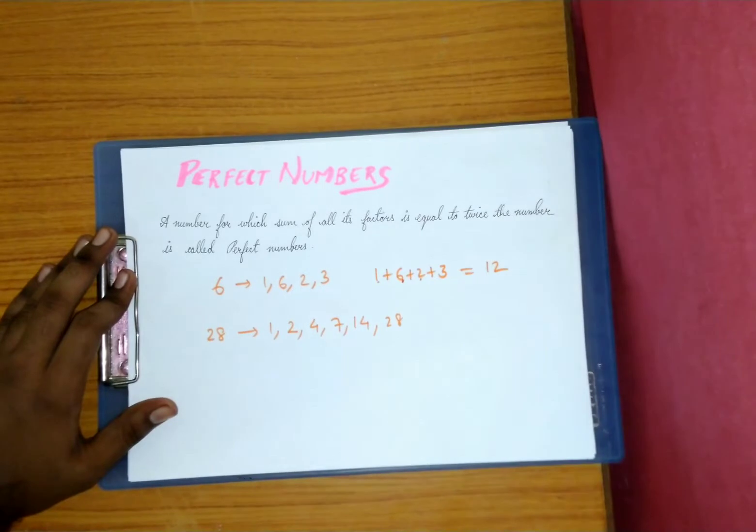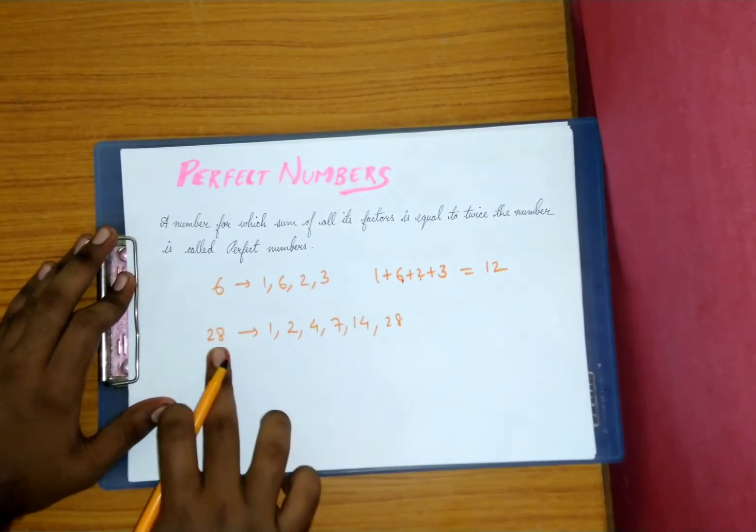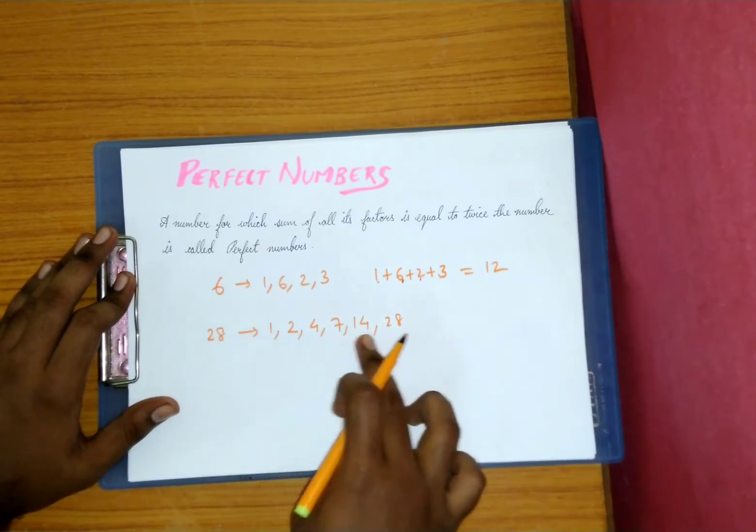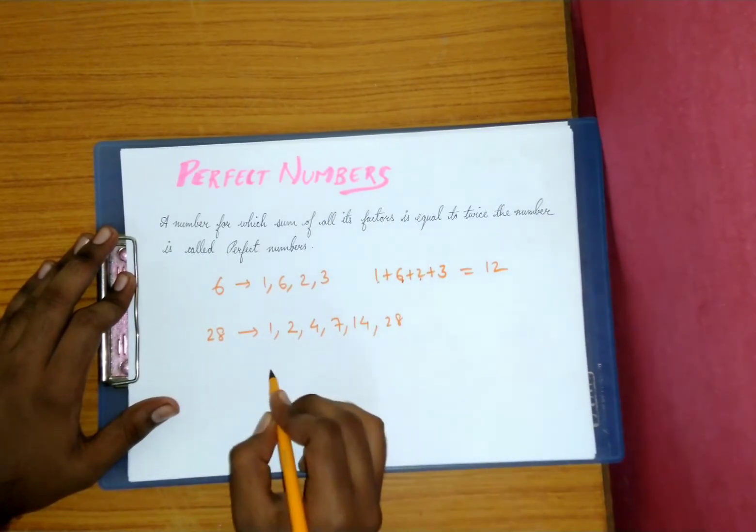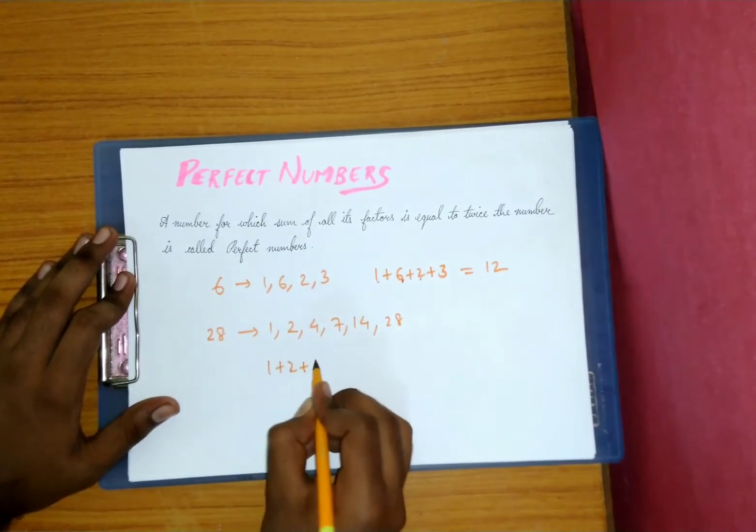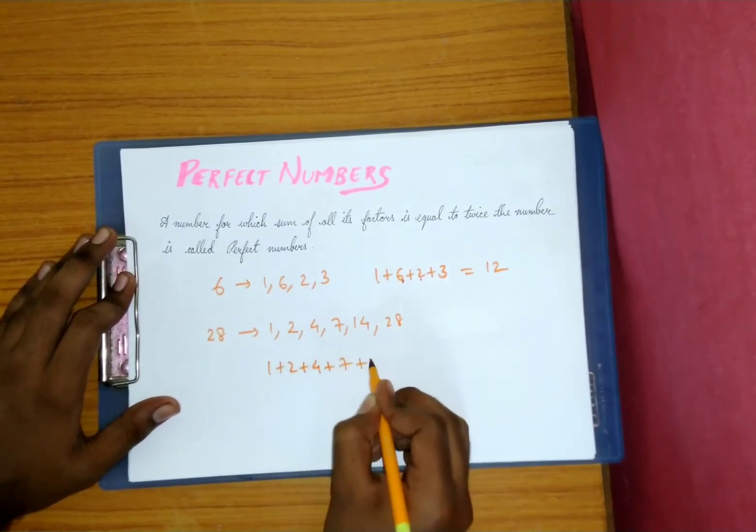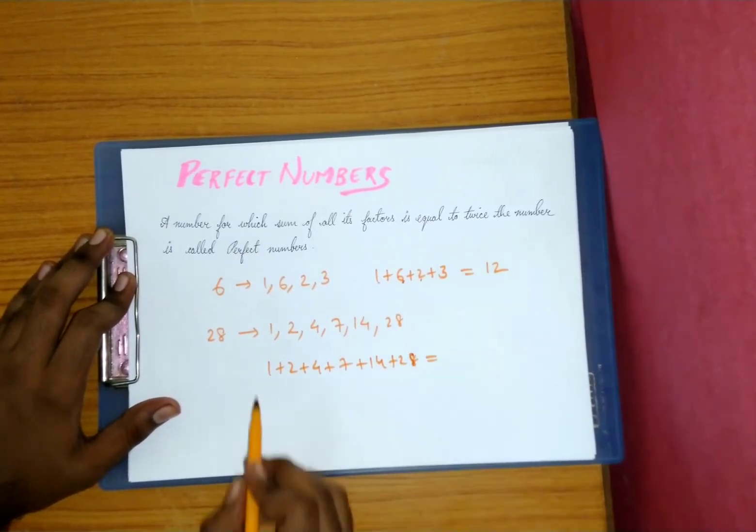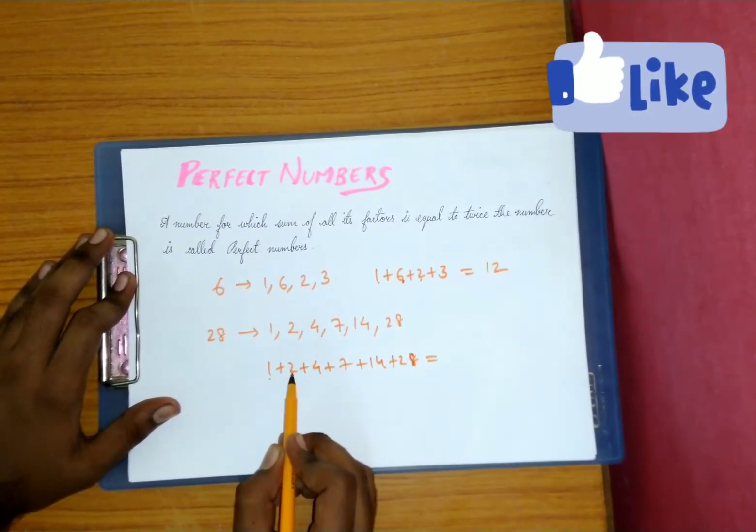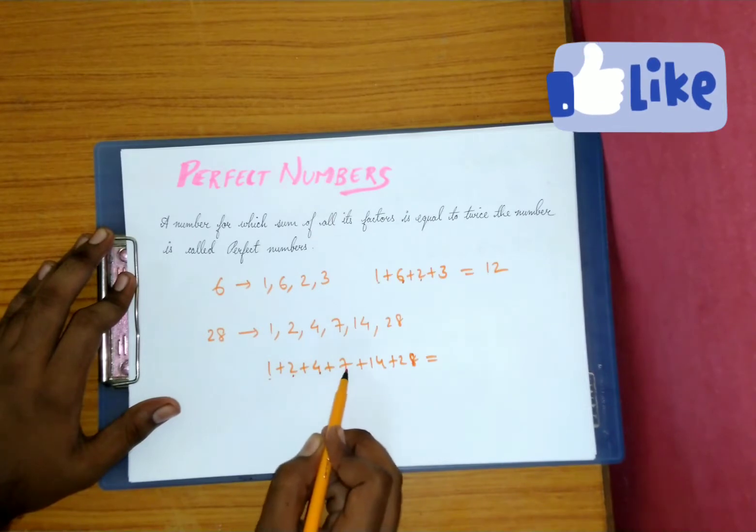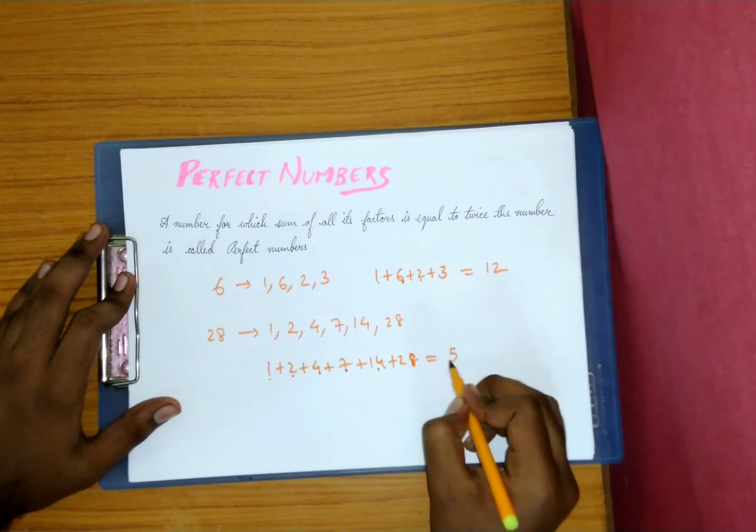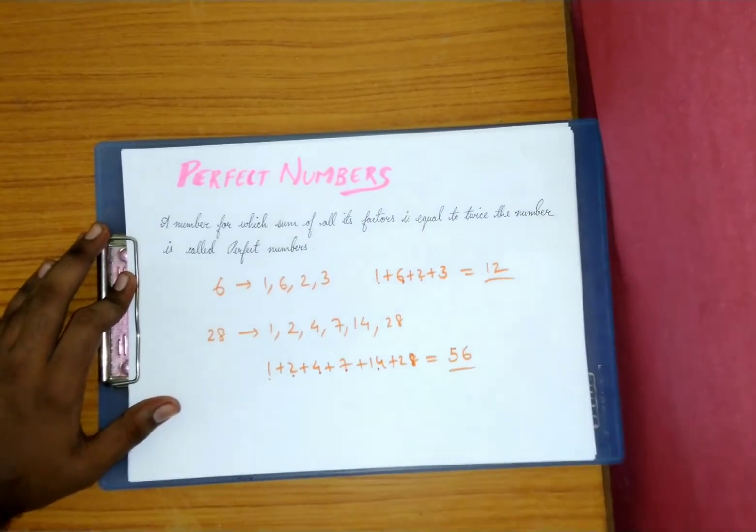And what about 28? 1, 2, 4, 7, 14, 28. So we have to add this: 1 plus 2 plus 4 plus 7 plus 14 plus 28. When we add, 1 plus 2 is 3, 3 plus 4 is 7, 7 plus 7 is 14, 14 plus 14 is 28, 28 plus 28 is 56.